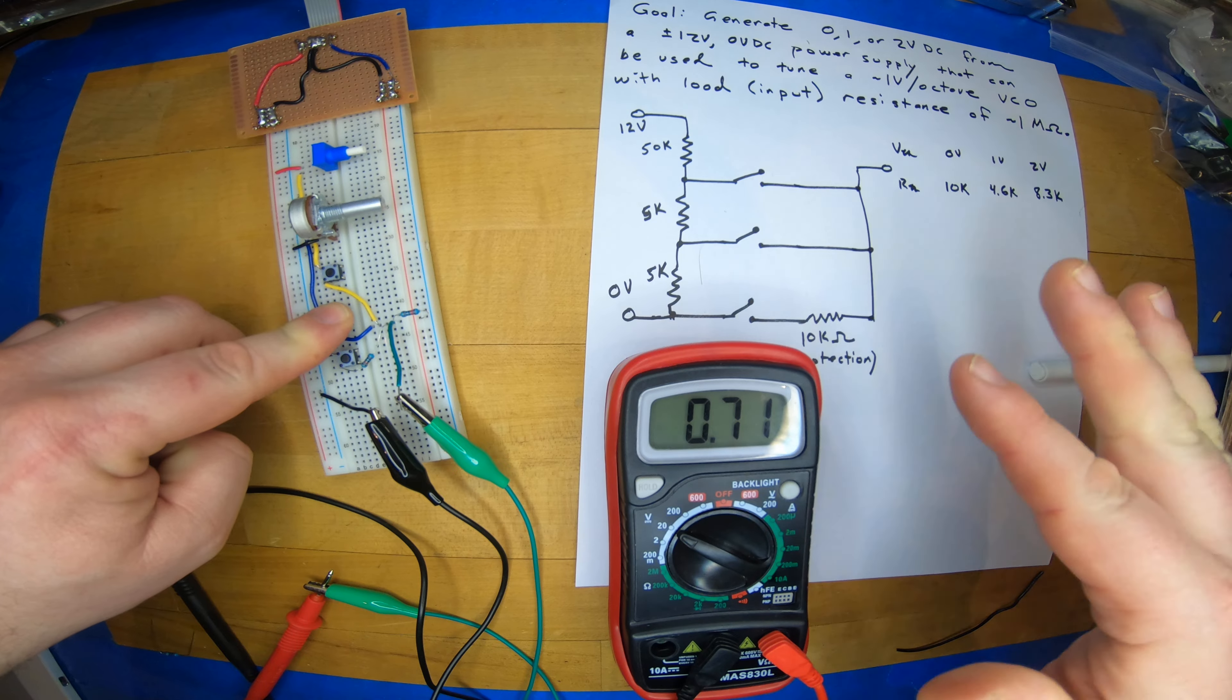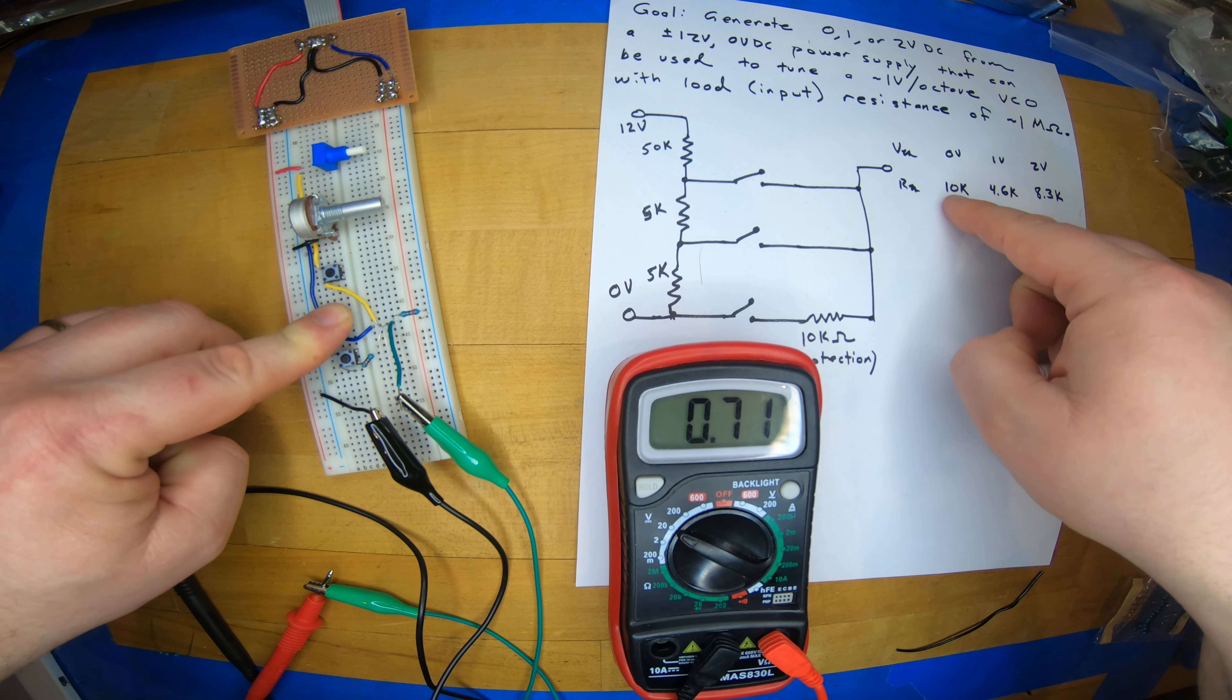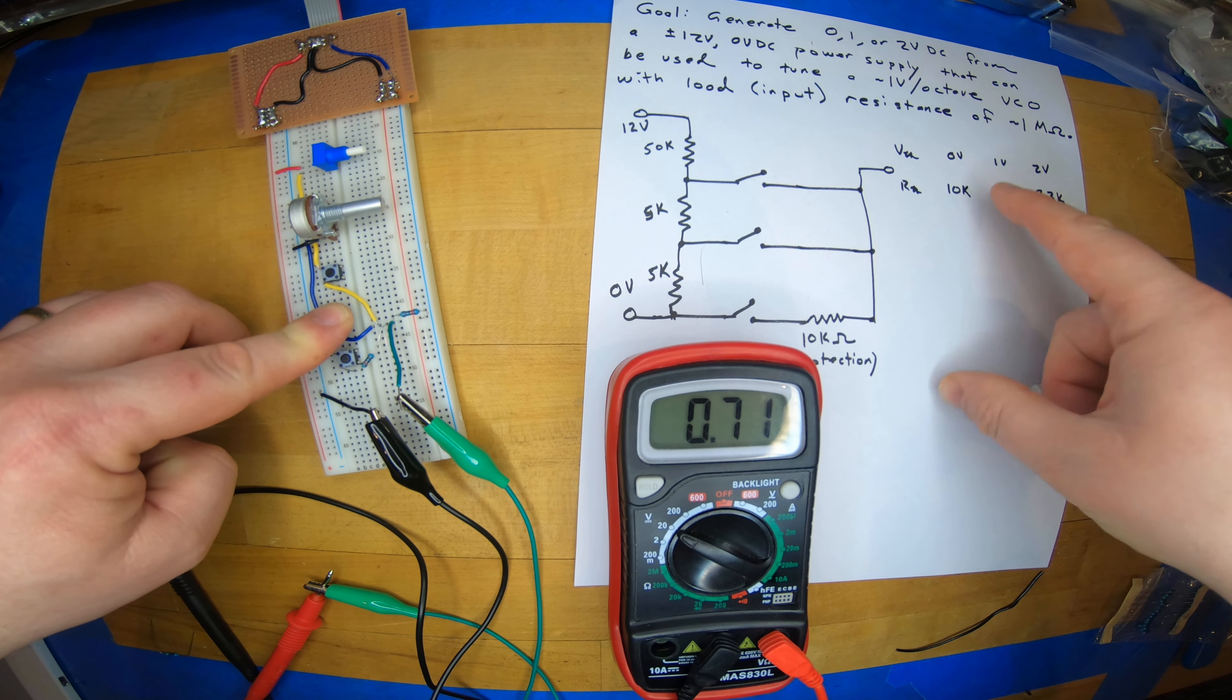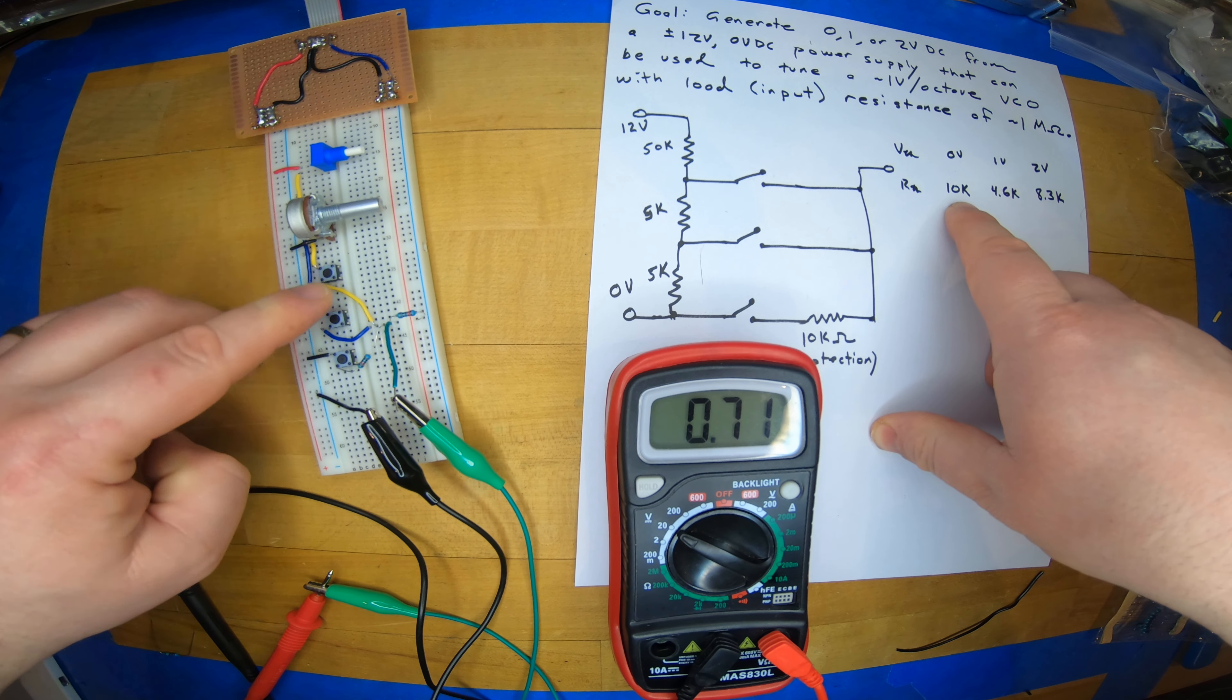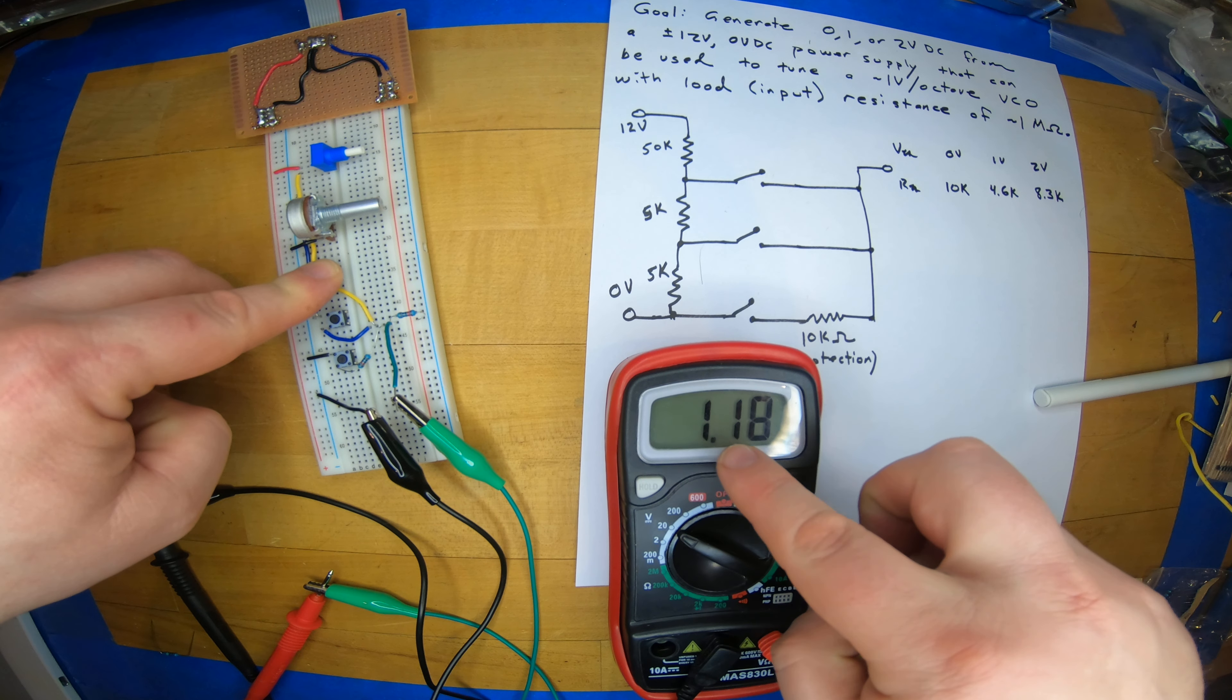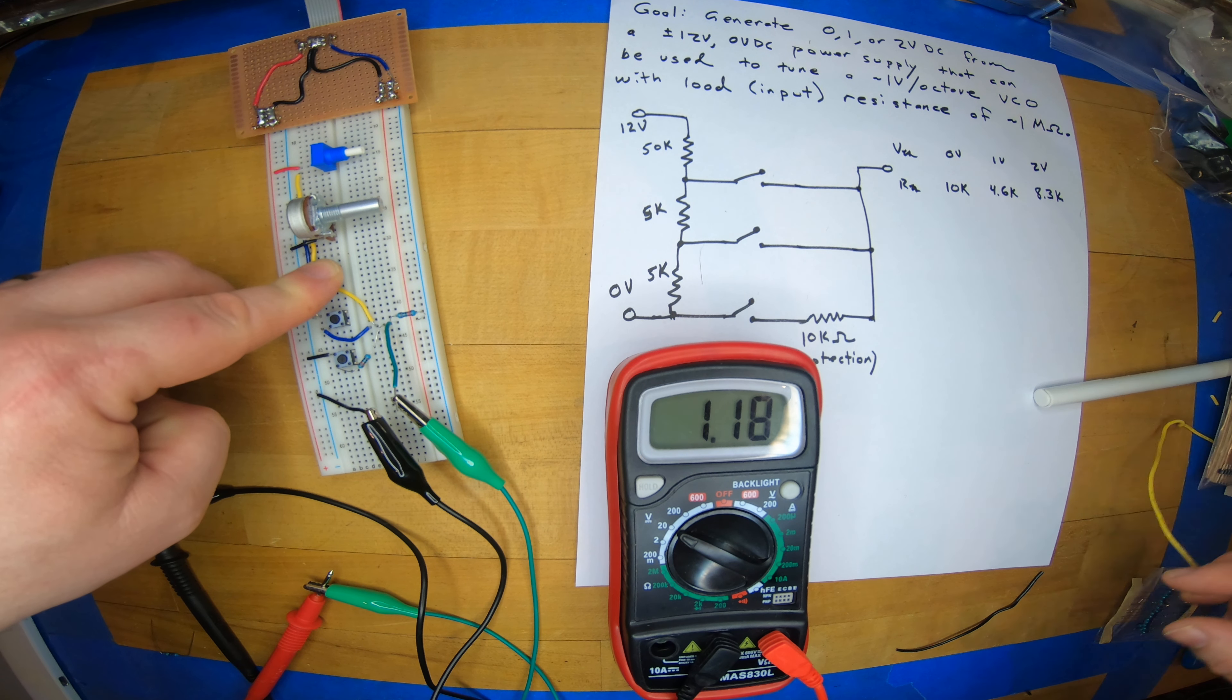1 divided by about 10K thevenin resistance here. So this is 4.6K. And I'm using a 10K, so I'm getting a drop of about a third. And then with this one, I expect a drop of closer to 2, so from 2 volts to 1. So from 2 to 1.2, I'm going to write these numbers down.